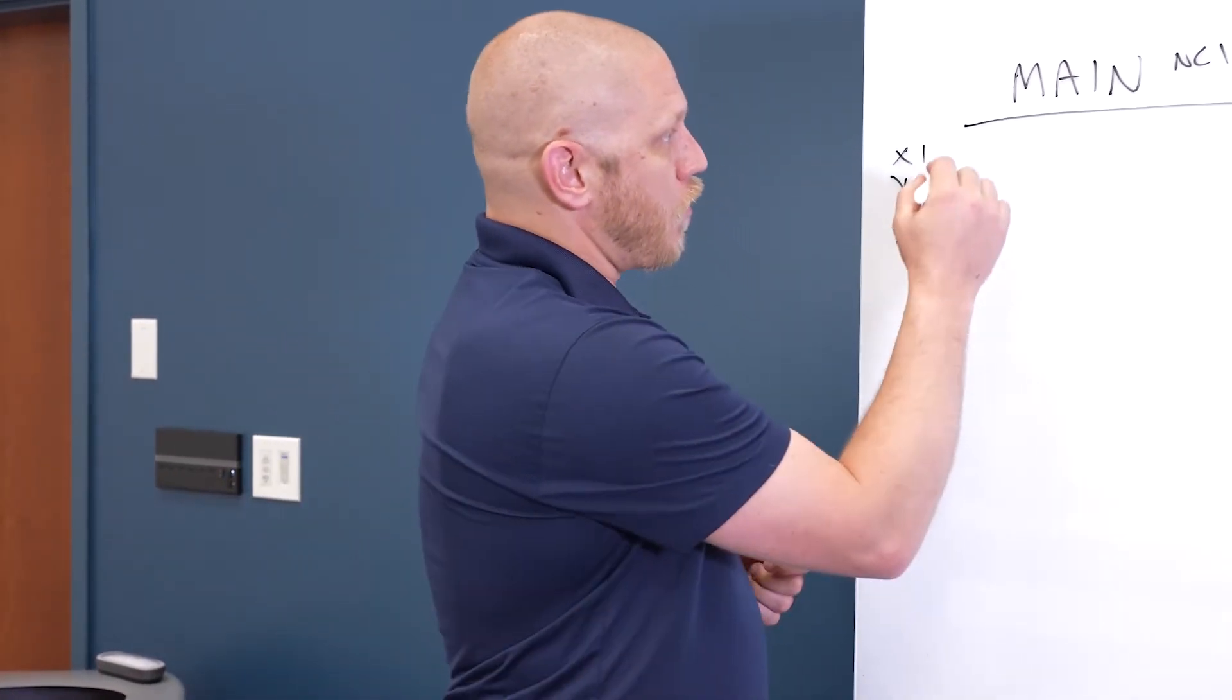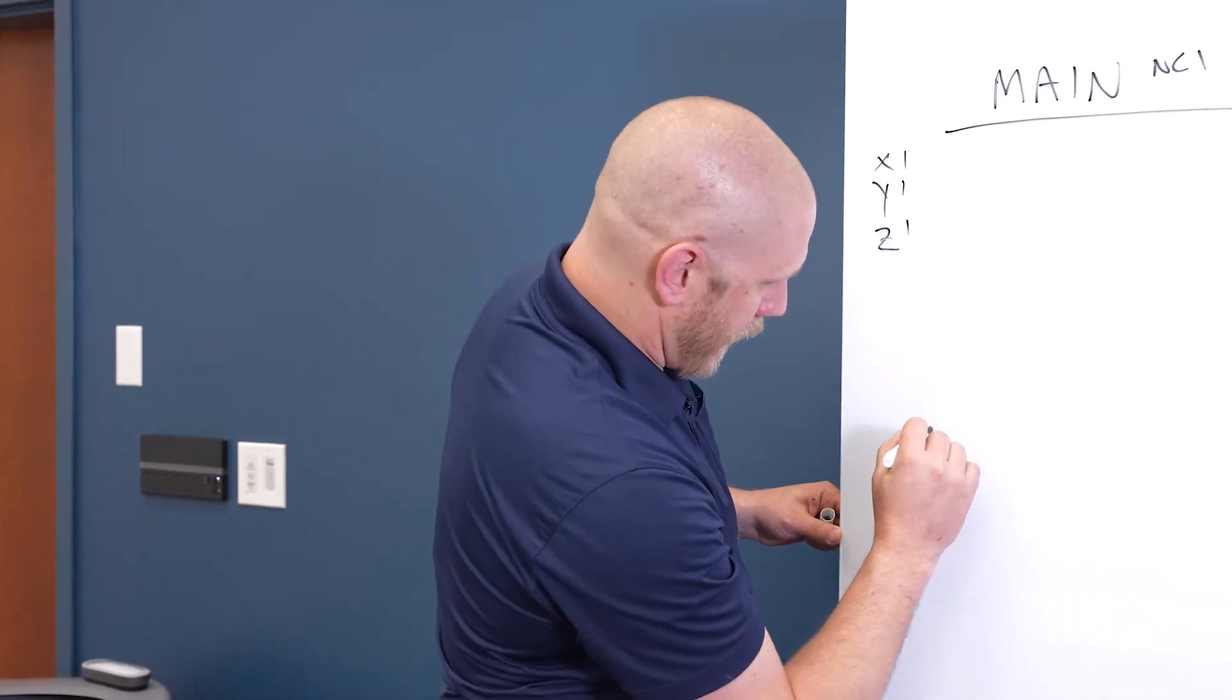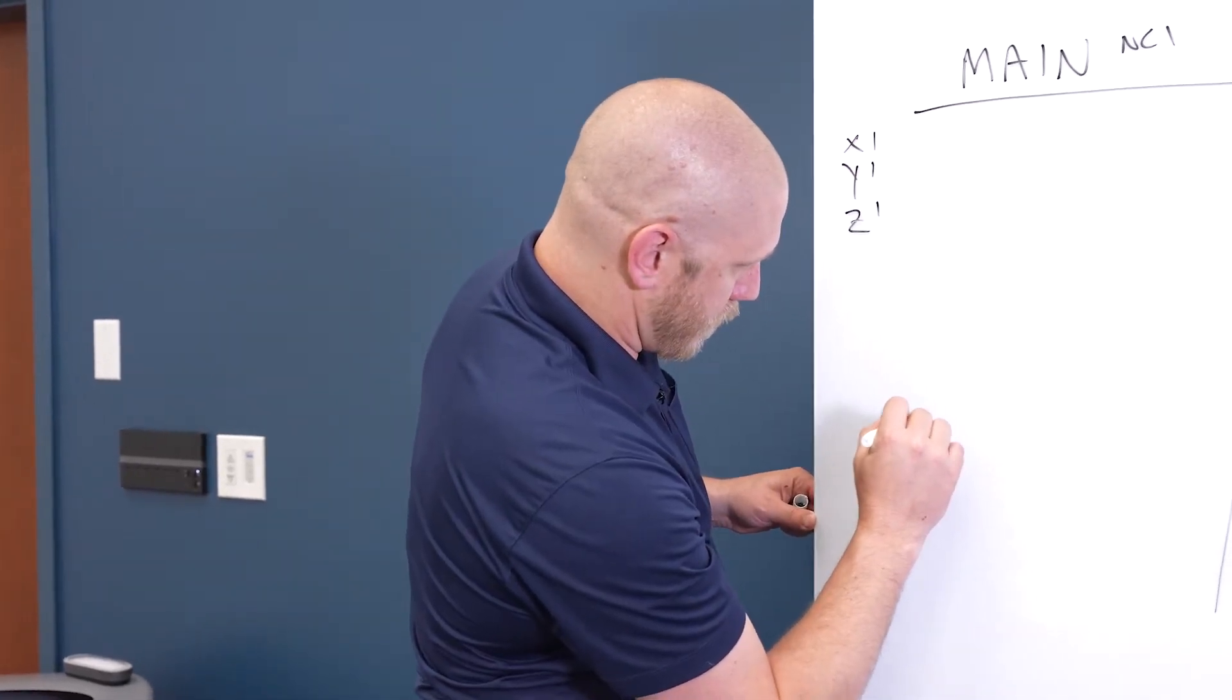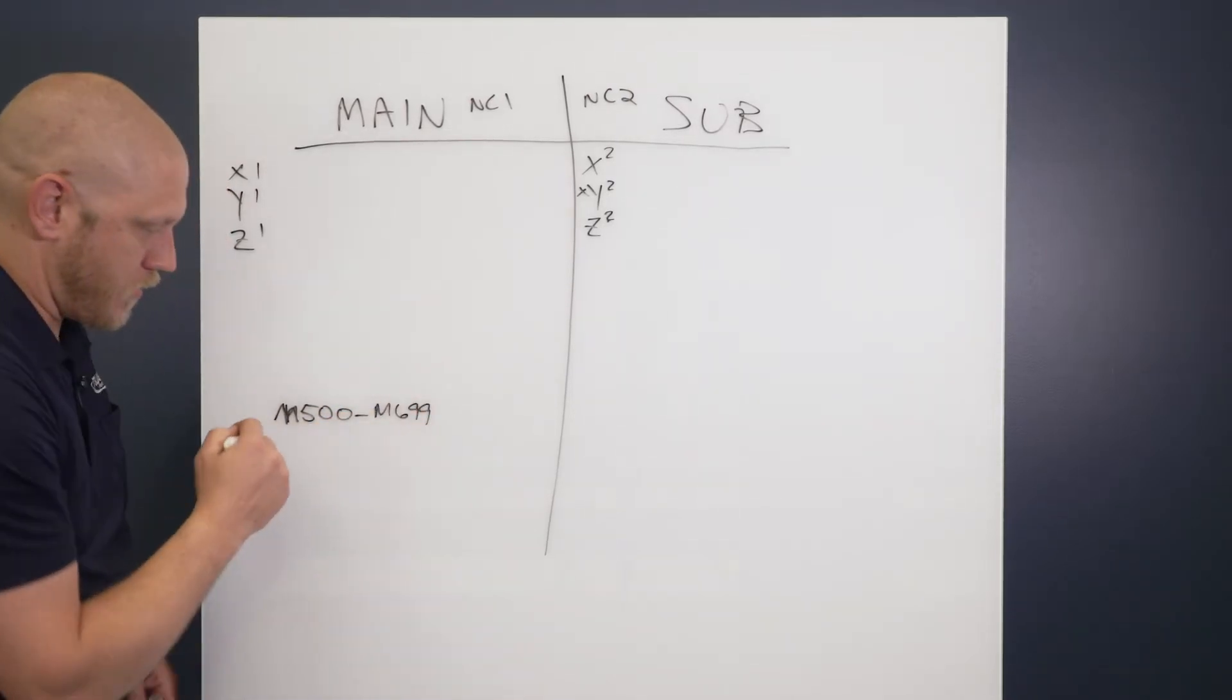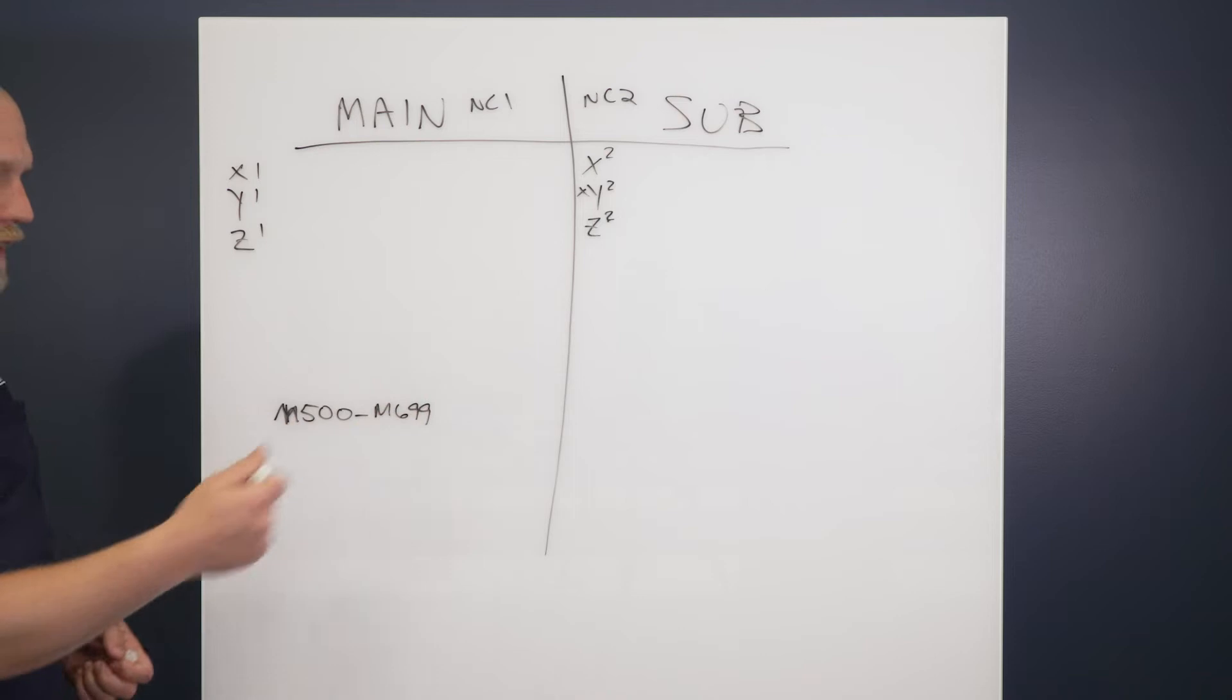On a Sagami machine, our weight codes are M500 through M699. So you have 199 weight codes or 200 weight codes that you can use.